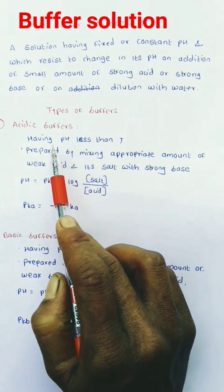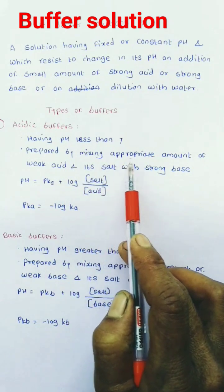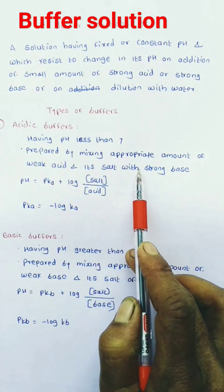Acidic buffer: Having pH less than 7. It is prepared by mixing appropriate amounts of weak acid and its salt with strong base.